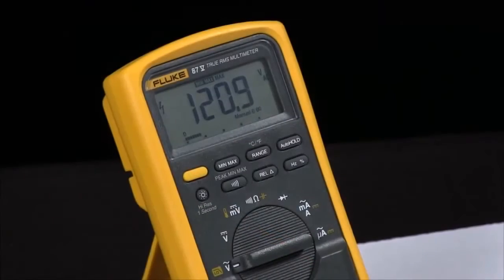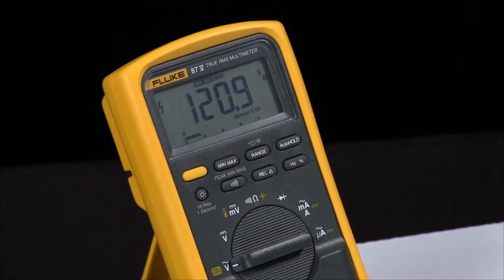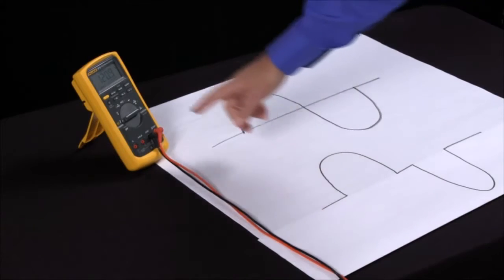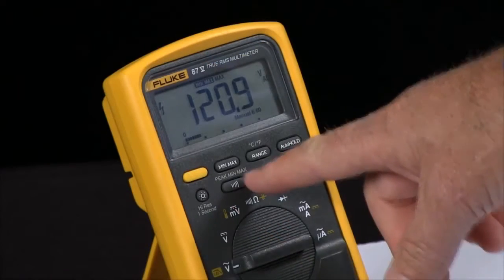How can I check my power quality with the Fluke 87 multimeter? There are some additional features in the Fluke 87 that help us test power quality. One of them is the peak min-max.